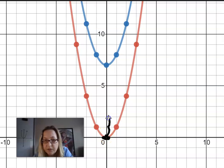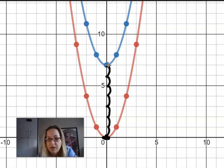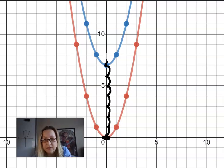I notice that if I'm comparing it to the blue parabola, I see that the vertex has been moved up 1, 2, 3, 4, 5, 6, 7 units, and the vertex of this blue parabola is on the y-axis at 7.